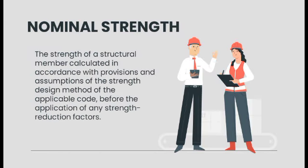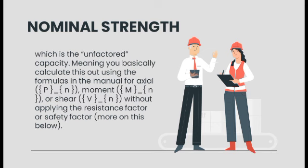Nominal strength is the strength of the structural member calculated in accordance with provisions and assumptions of the strength design method of the applicable code, before the application of any strength reduction factors — which is the unfactored capacity. Basically, you calculate this out of the formulas in the manual for actual moments or shear without applying a resistance factor or safety factor.